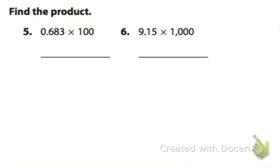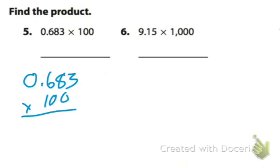Page 458, problems 5 and 6. We have 0.683 times 100. We have a strategy for this, but we can just simply multiply this out.